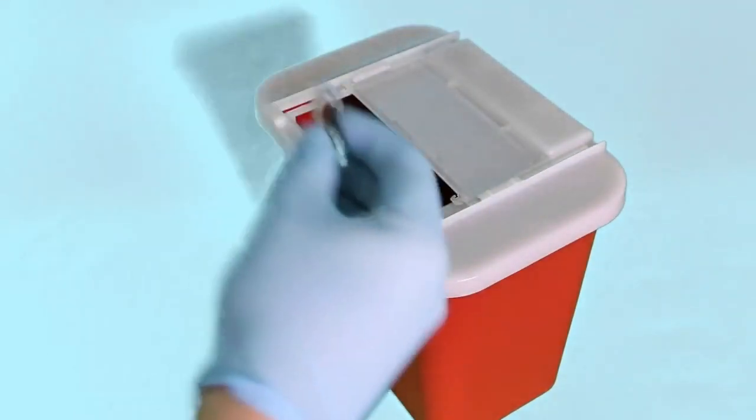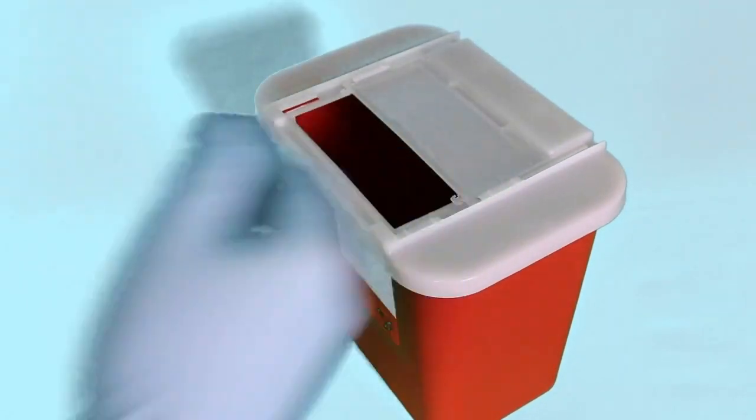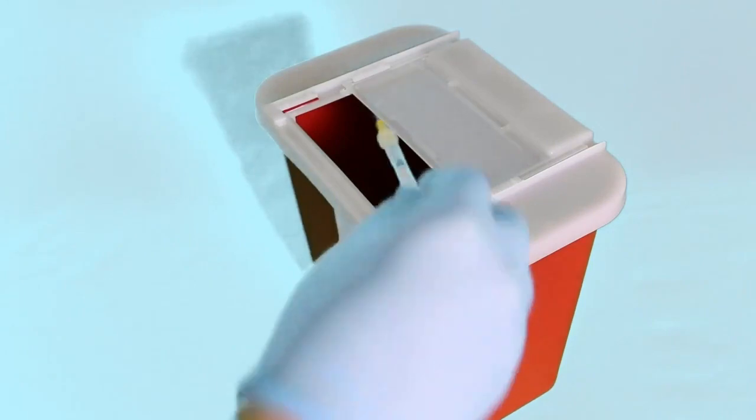When done, discard the broken ampoule and used syringe into a sharps container. Again, this is not the ideal method for a response to an anaphylaxis emergency, but when autoinjectors are unavailable, it is good to understand the alternatives and how to administer them.